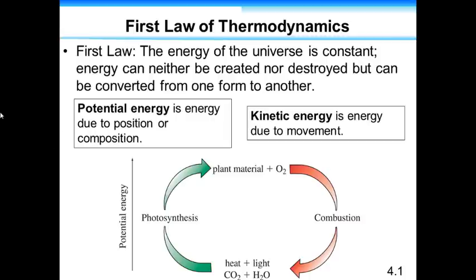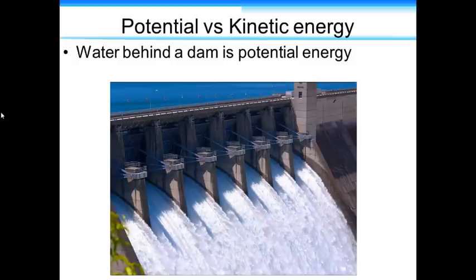One example of this is photosynthesis. The plants absorb light, and they store that light energy into building plant material. That plant material has potential energy, and frequently we either burn it as wood, or eat it, and are able to move and do things. So we're either combusting it as wood, or we're having our own type of internal combustion, releasing that energy, and allowing us to do kinetic movement.